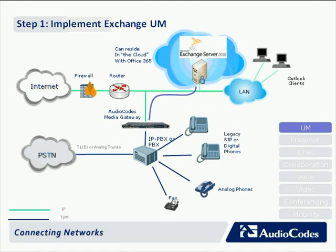The first step is implementing Exchange UM. For all the different PBXs we had within our own business, this is a way to disconnect that legacy voicemail system and integrate it into Exchange. We implement an Exchange server and deploy one of our own media gateways between the PBX and the LAN. This provides connectivity so that when someone doesn't answer a call, the PBX forwards the call to the gateway, the gateway converts it to SIP, and delivers the SIP call to Exchange, which then delivers the message into the user's desktop.